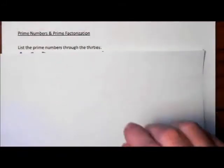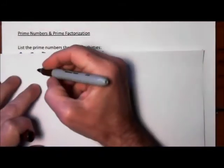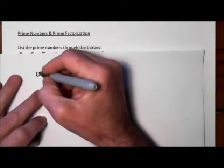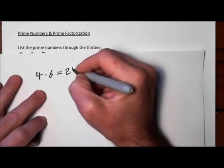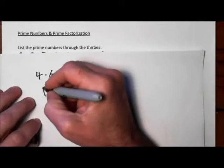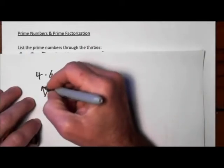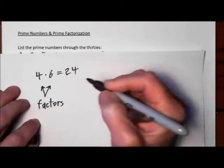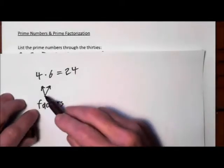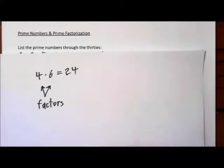So for instance, we'll say 4 times 6 is 24. 4 and 6 are factors. They're not prime factors, but they are factors of 24.